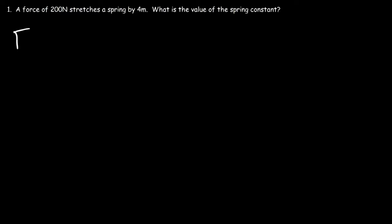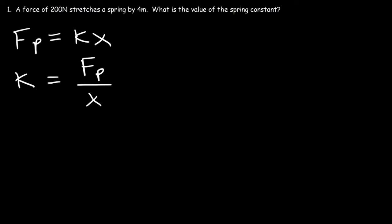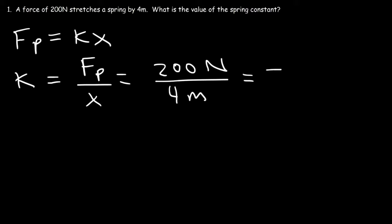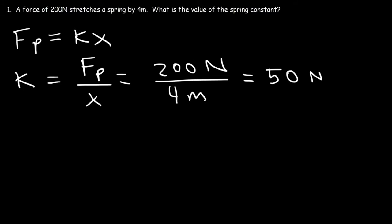Since the force used to stretch it, Fp, is equal to kx, the spring constant k is simply the ratio of the force and the distance you stretched the spring. So we have a force of 200 newtons, and it stretches the spring by a distance of 4 meters. So 200 divided by 4 is 50, and the spring constant has units of newtons per meter. So it's 50 newtons per meter.